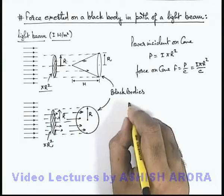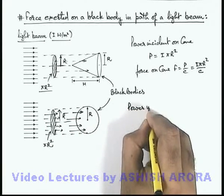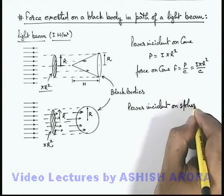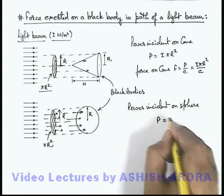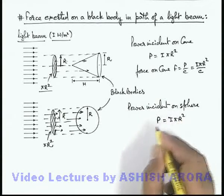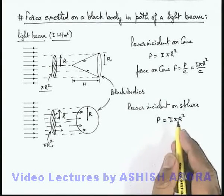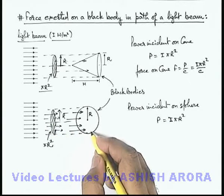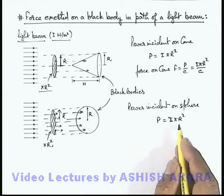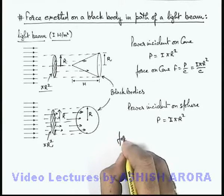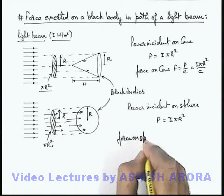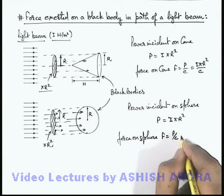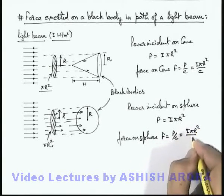Again, we can directly calculate the power incident on the sphere. This can be written as P = Iπr² because the power of a light beam can be given by the product of its intensity and the normal cross sectional area. So in this situation, the force on the sphere can be written as F = P/c, so this will be again Iπr²/c.